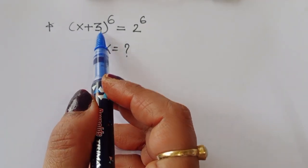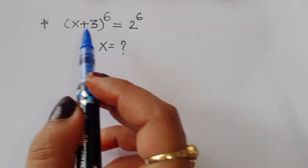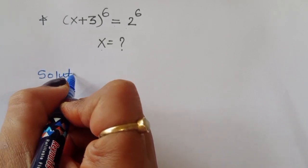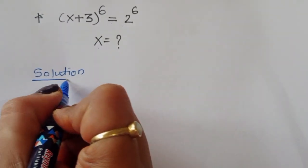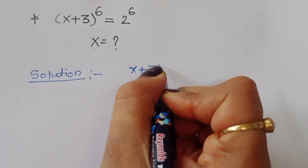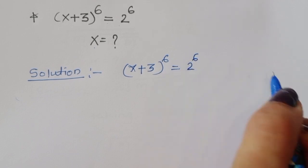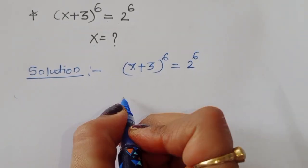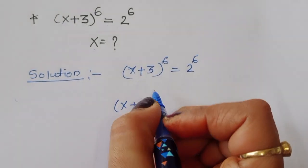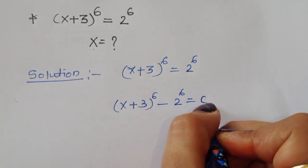The question is: given (x+3)^6 = 2^6, we have to find the value of x. Let's see the solution. We can rearrange this as (x+3)^6 minus 2^6 equals 0.